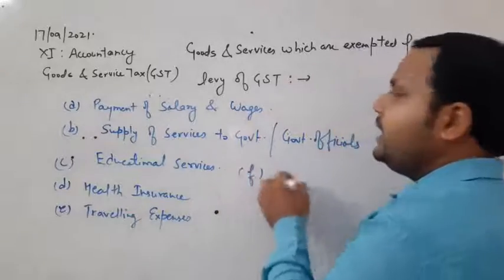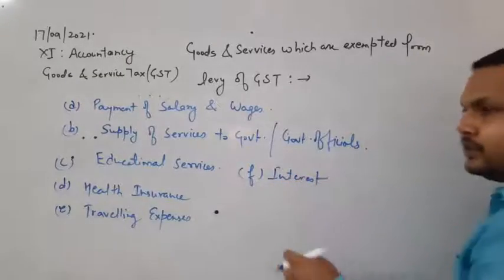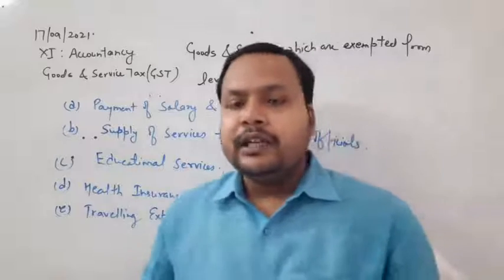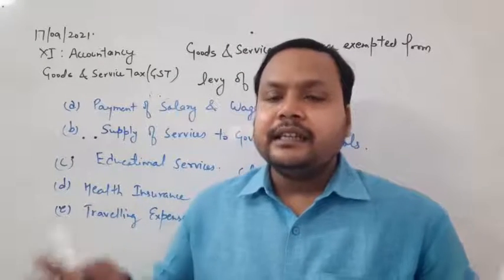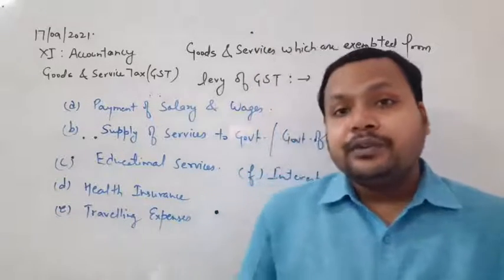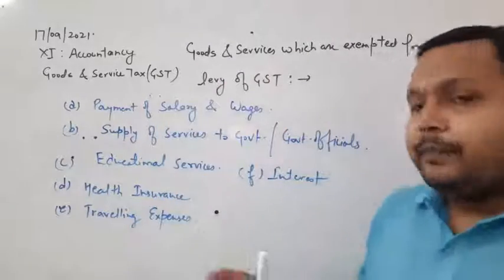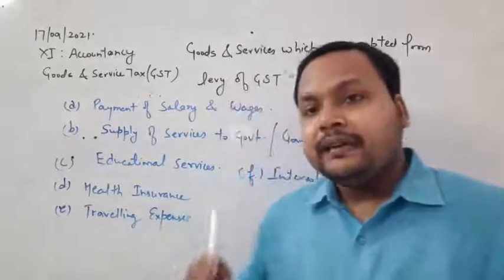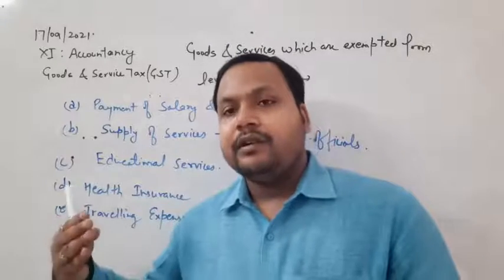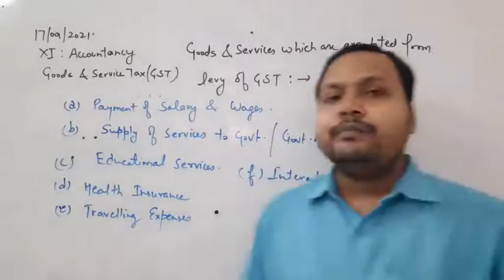The last exempted item is interest. If you pay interest on a loan — for example, a bank gives a loan of 10 lakh to a proprietor — the bank is providing a service. We pay interest because we use the money to fulfill our needs. The loan facility for which we pay interest is also exempted from GST.